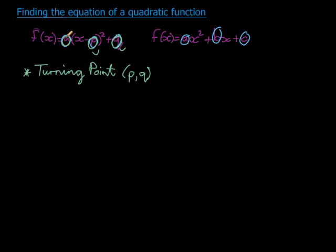And remember this, don't forget it: when I have one variable or one parameter left to solve, I can solve it by substituting any point. So they can then give me any other point, and then I'll be able to use this formula to find the equation of the parabola.